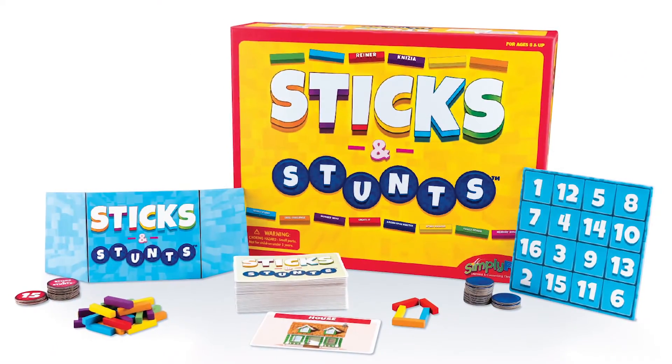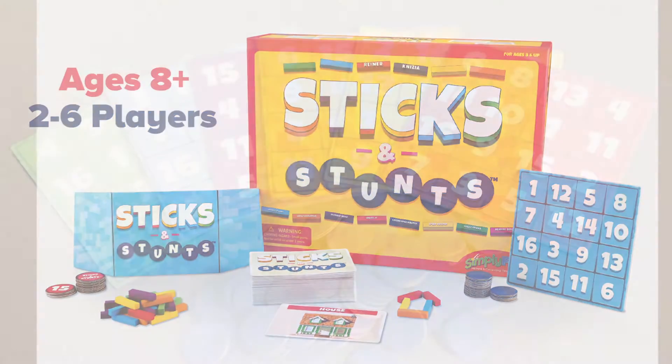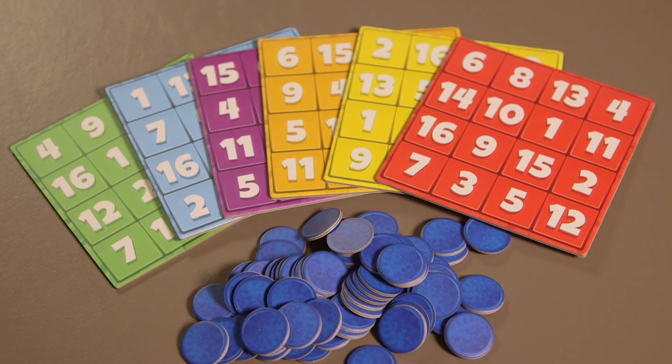Sticks and Stunts is best played with people ages 8 and up and can be played with 2-6 players. Each Sticks and Stunts game box contains 6 double-sided bingo boards and 72 bingo markers to mark the winning spots each round.